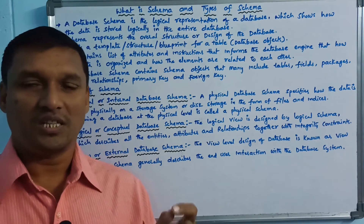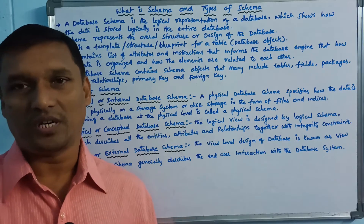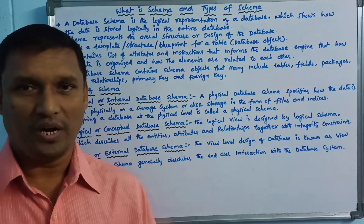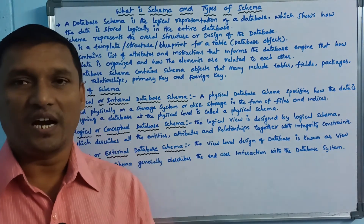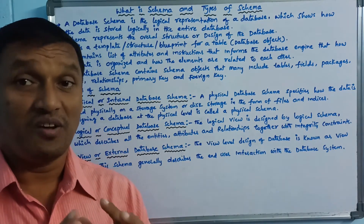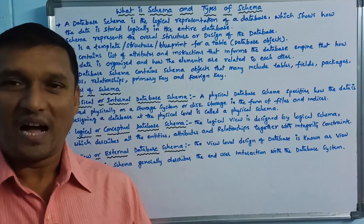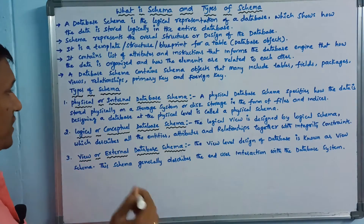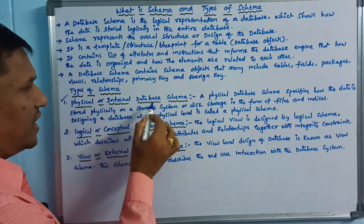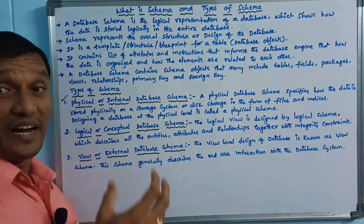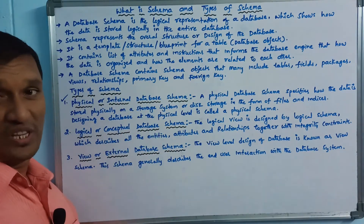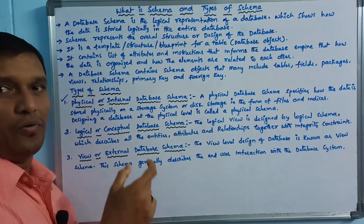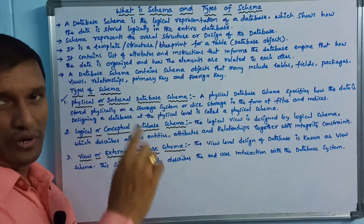What is the schema? There are 3 levels of abstraction and 3 levels of architecture. If the database is designed, 3 levels of abstraction will be followed. That is the topic of types of schema. First: physical or internal database schema. Database architecture has 3 levels — physical level, logical level, and view level.